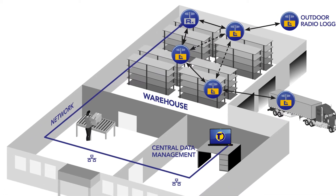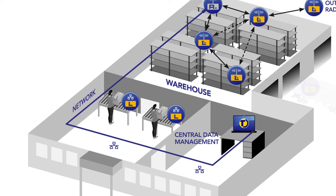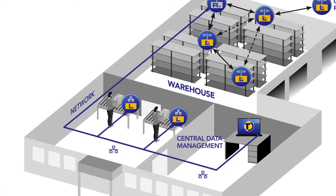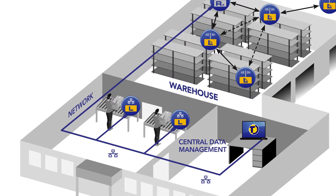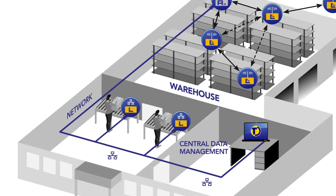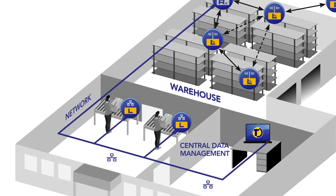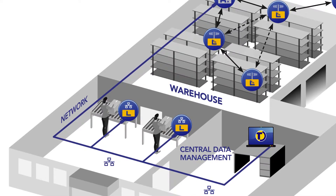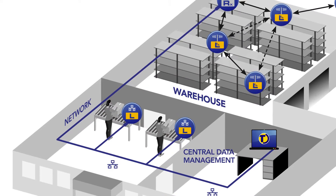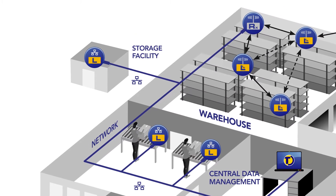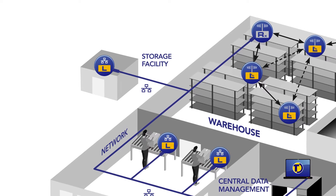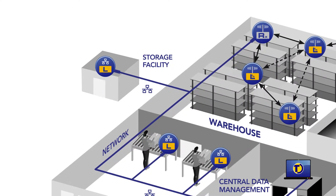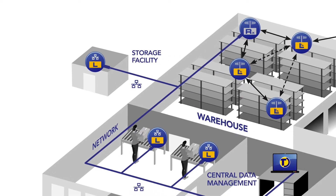TinyTag Plus LAN loggers plug into a network point, recording and sending data across a LAN for viewing in TinyTag Explorer Connect. They are powered through their LAN connection and battery backup will keep the logger recording if this should fail. They can be placed wherever a convenient network point is available and are ideal for locations where radio signals may be problematic due to range or physical obstructions.